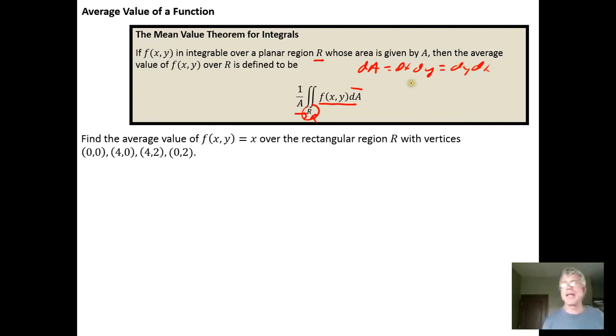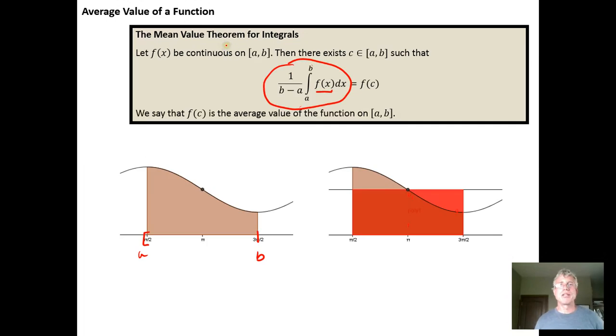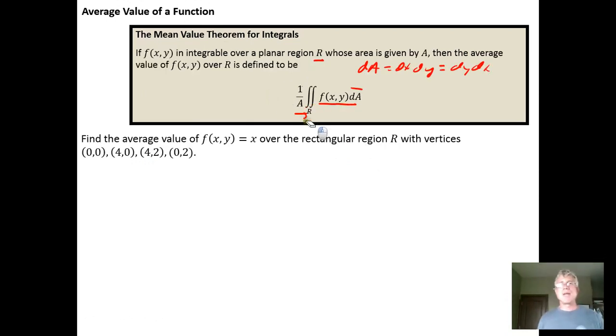Remember dA is just dx dy or dy dx, so it's an area in the plane. We're taking the volume and dividing it by the area of the region, whereas in calc 1 we were taking the area under the curve and then dividing by the length of the line segment. So we're just ramping this concept up a dimension.